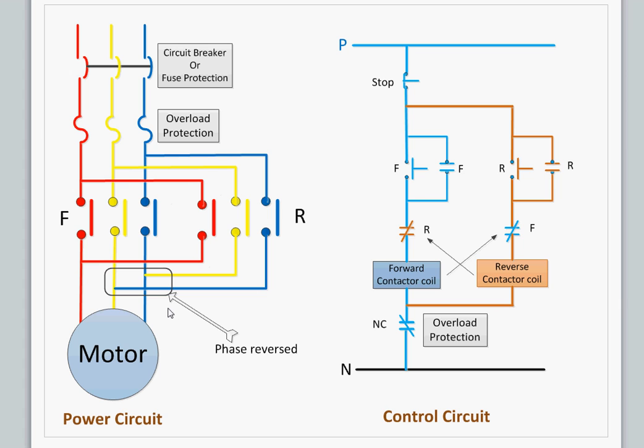The direction is changed when you swap the phases. You can see here the yellow phase in the forward side when the forward contactor operates goes here. But during reverse, the yellow phase is applied to the blue side and the blue phase to the yellow side. That's the key to changing the motor's direction.